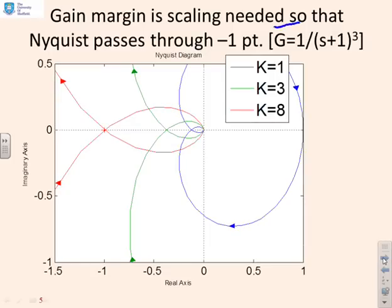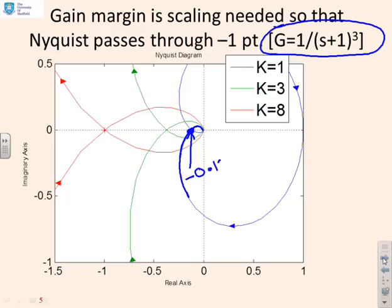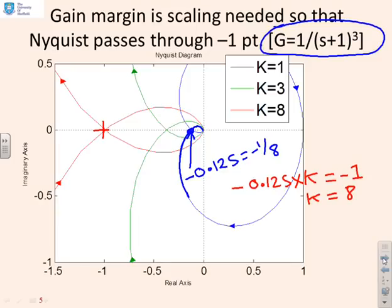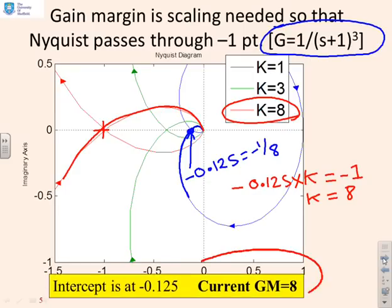Here's a different example: G equals 1 over (s+1)³. This gives the blue plot shown, and there's an intercept with the negative real axis at minus 0.125, or minus 1/8. The gain margin is again defined as how much I can multiply by to reach the minus one point. So: minus 0.125 times K equals minus 1, giving K equals 8. And indeed, if we choose K equals 8, the Nyquist diagram goes through the minus one point exactly. So the gain margin is 8.